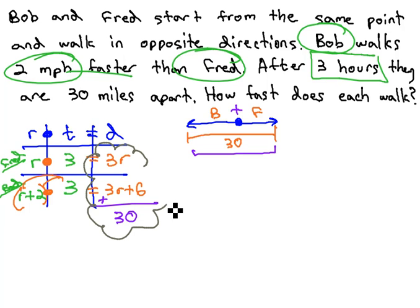This last column then gives us an equation we can use to solve for our variable. 3R plus 3R plus 6 must equal the total distance of 30. Fred's distance plus Bob's distance is 30.